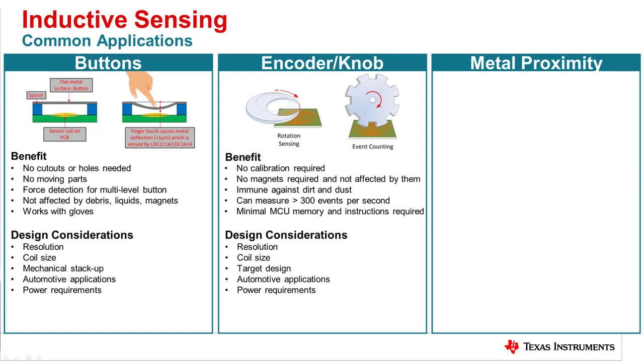The second common application is an encoder or knob for incremental position detection or rotational detection. The target design is a bit more complex for this application as it needs to account for the rotational motion so the LDC can detect incremental position as it senses the absence or presence of the conductive target. For event counting, sensing both increments and decrements, two sensors must be used.